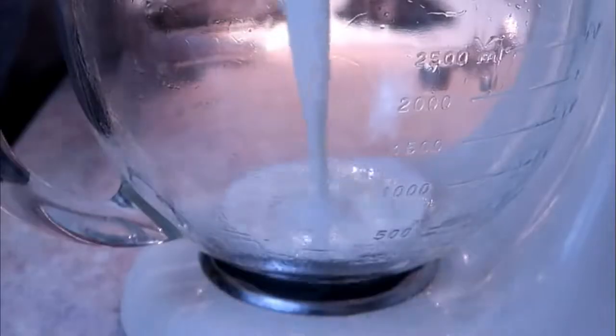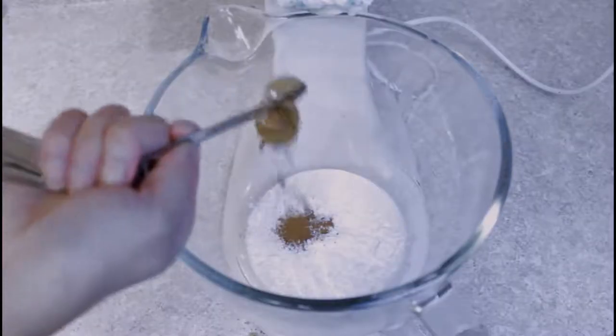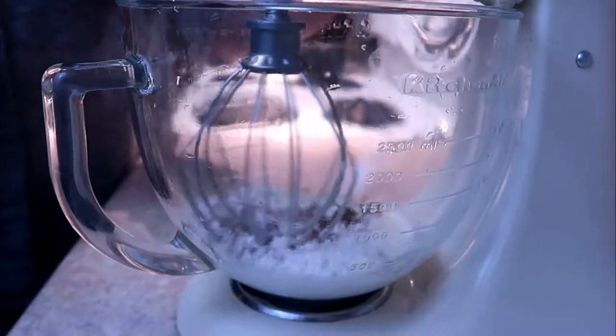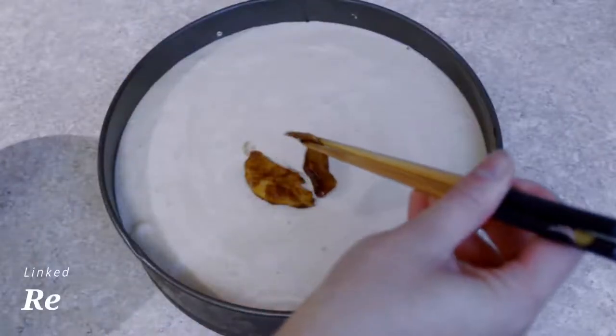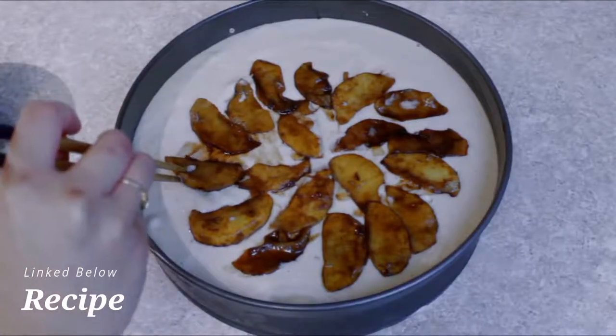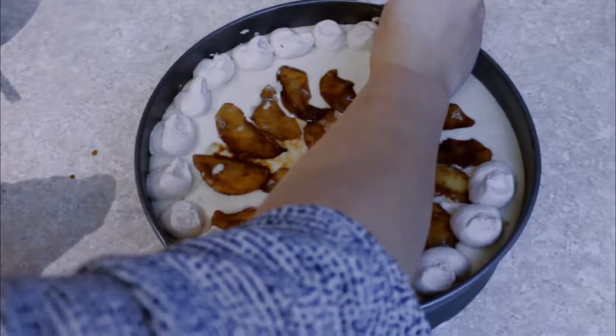Then we're going to make our whipped cream on the top. The whipped cream is just heavy cream again. This one's a little bit more wet. Add cinnamon, some powdered sugar, and vanilla. You're just going to add the toppings however you like. I just laid them out and then I added the whipped cream on the top.